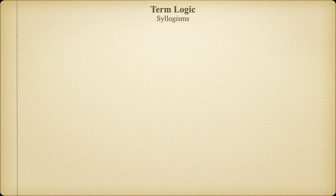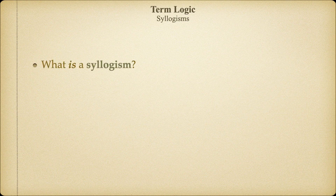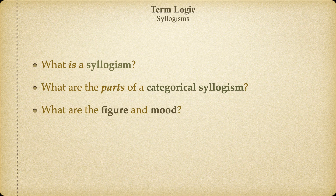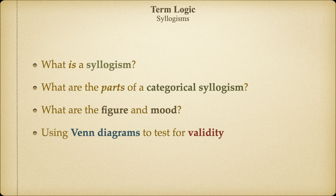In the next three videos, we're going to learn how to build and evaluate more complex arguments using categorical propositions. In Part 1, we'll learn what a syllogism is and then examine all of the parts that go into making a categorical syllogism. In Part 2, we are going to explore the figure and mood of categorical syllogisms. Finally, in Part 3, we'll learn how to use Venn diagrams to test categorical syllogisms for their validity.